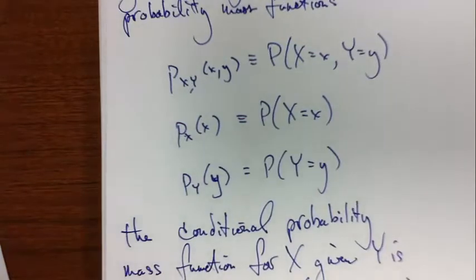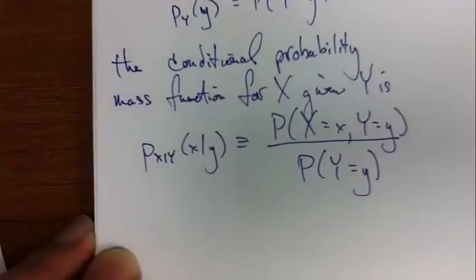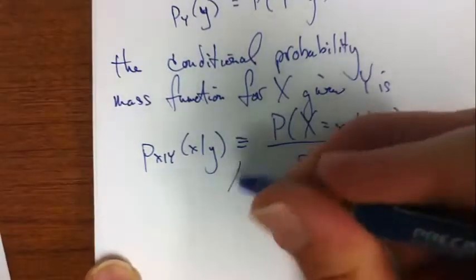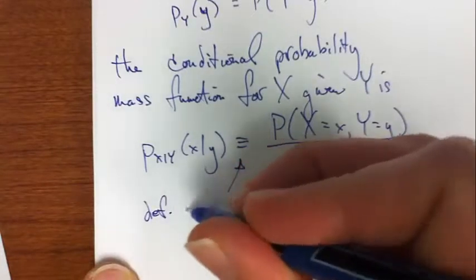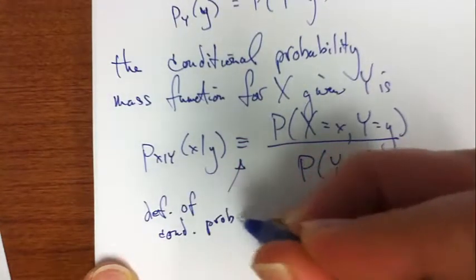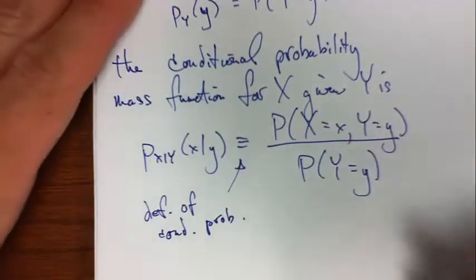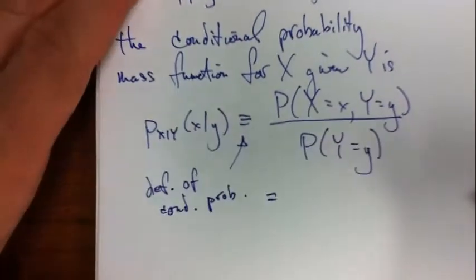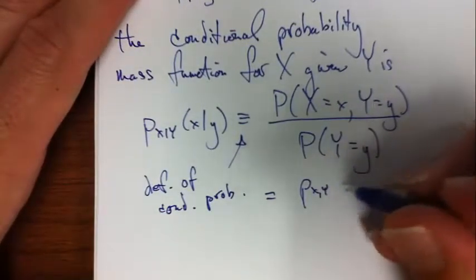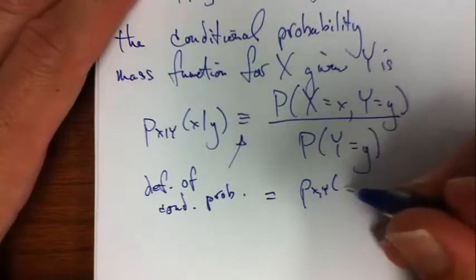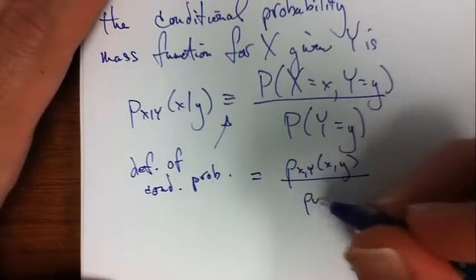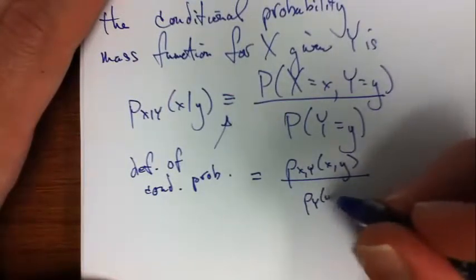So given these three functions here, then the conditional probability mass function for x given y is defined this way. We've seen this before, right? This just follows from the definition of conditional probability.